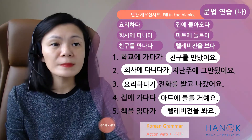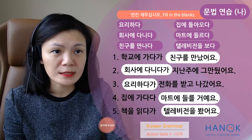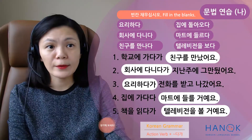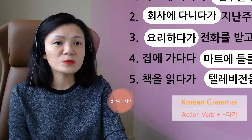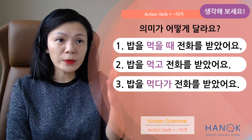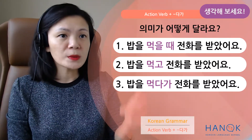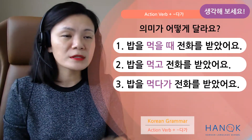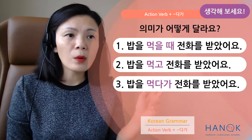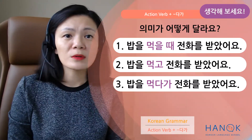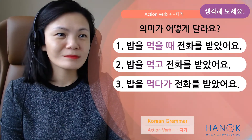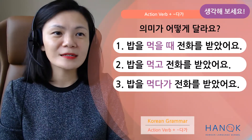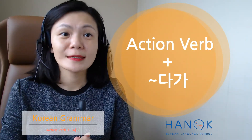책을 이따가 — 텔레비전을 봐요, 텔레비전을 봤어요, 텔레비전을 볼 거예요 — 다 괜찮아요. 지금 여러분 생각해 보세요. Think about it — this will help you understand 다가 a bit more. When you compare it to 때, 밥을 먹을 때 전화를 받았어요. 밥을 먹고 전화를 받았어요. 밥을 먹다가 전화를 받았어요. 이거 다 어떻게 달라요? 생각하시고 알려주세요. 여기까지입니다. 오늘 다가 했습니다. 감사합니다.